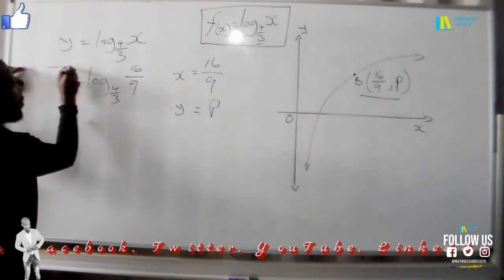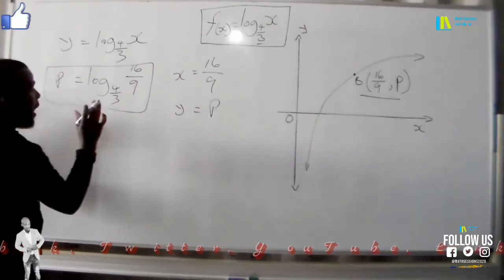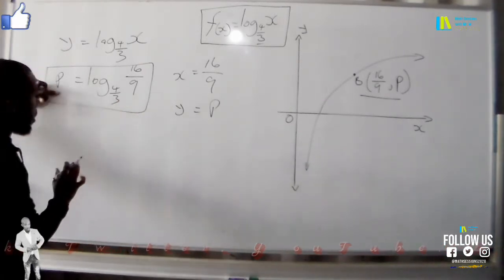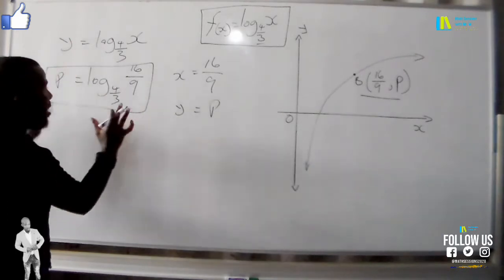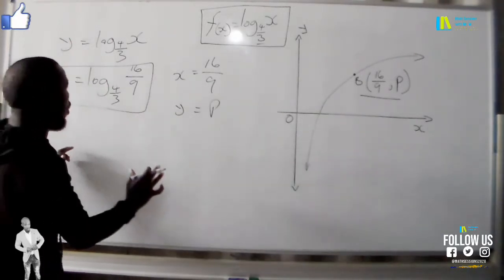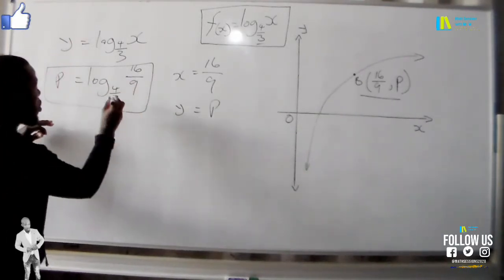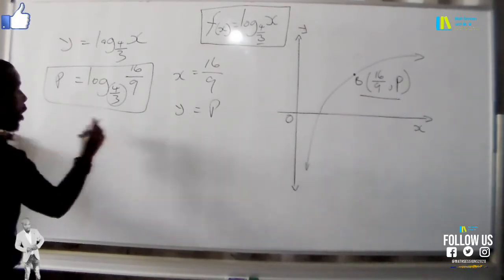From this form it's in a log form now, and the only thing that is unknown here is the p, the one that we want, the y value. We are going to interchange this to an exponential form because it's in a log form.